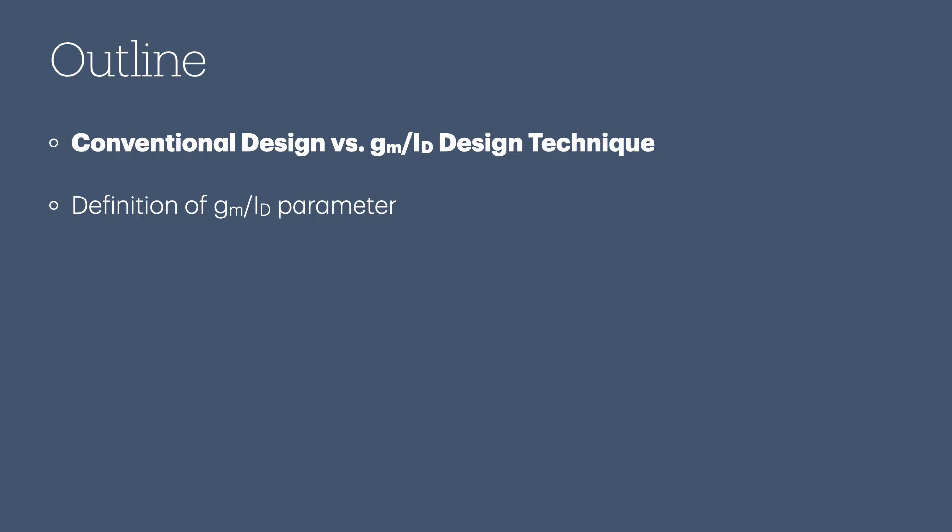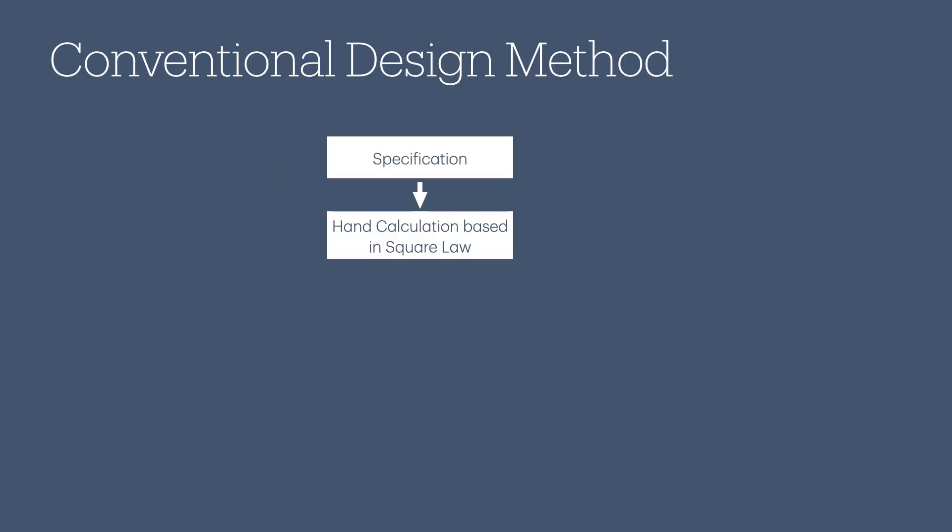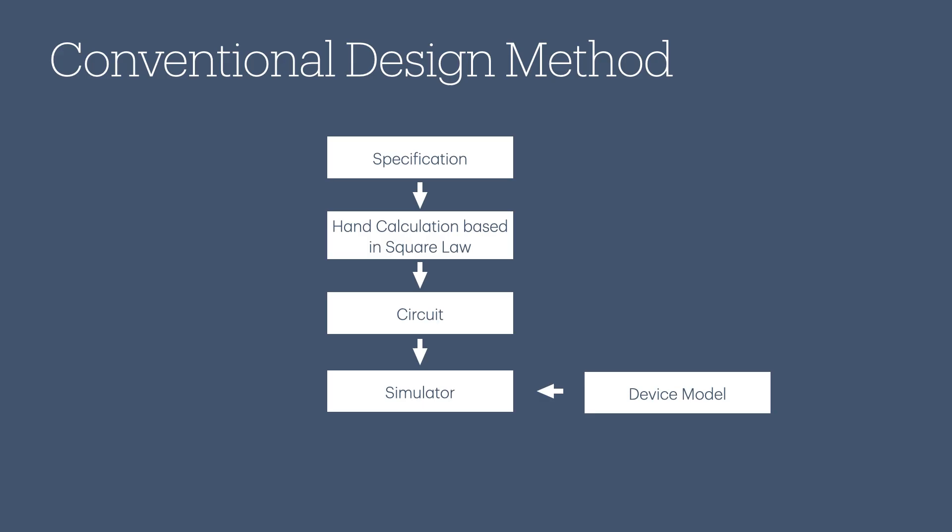Conventional Design versus GM over ID Design Technique. In the conventional design of analog circuits, given a target specification, we start our design with hand calculations based on the square law. Then we have our first circuit with the initial sizes of the transistors. We then perform circuit simulations using Cadence or other simulators with device models of transistors from the foundry. Then we have our first results. Most of the time, there is a mismatch between what we have expected using our hand calculations and the simulation results.